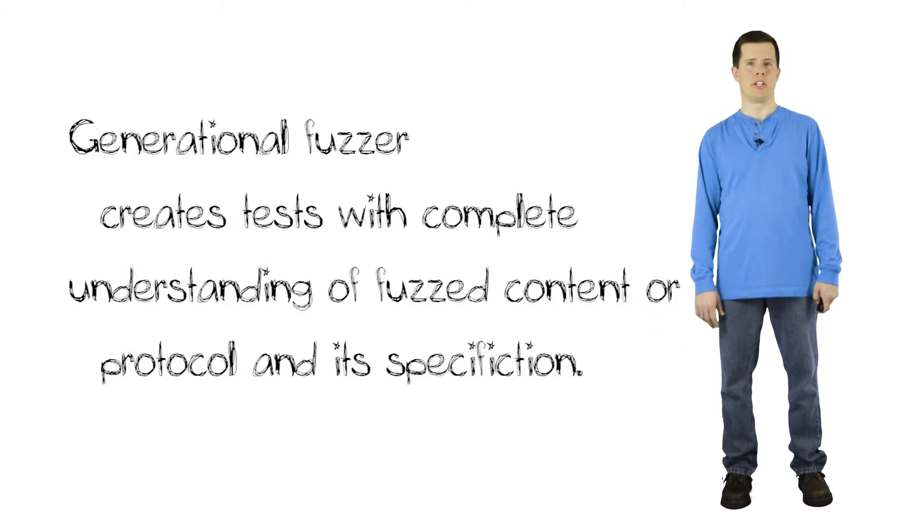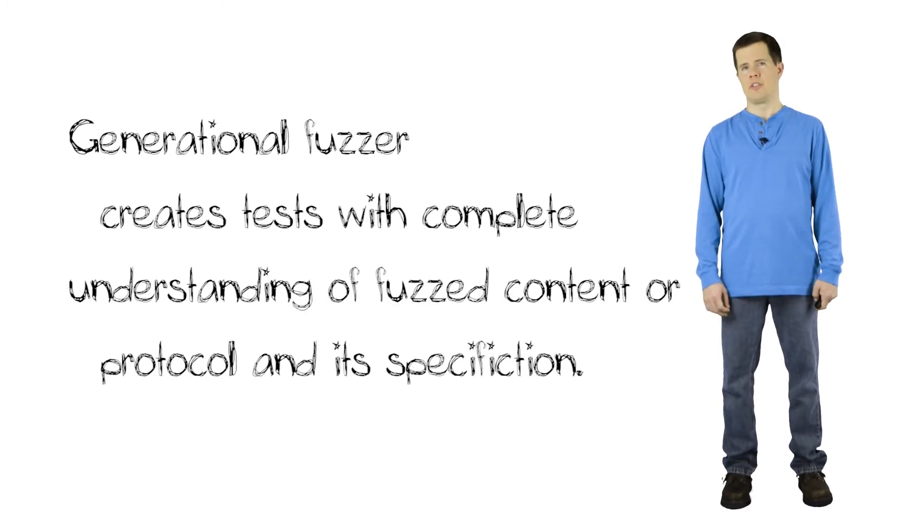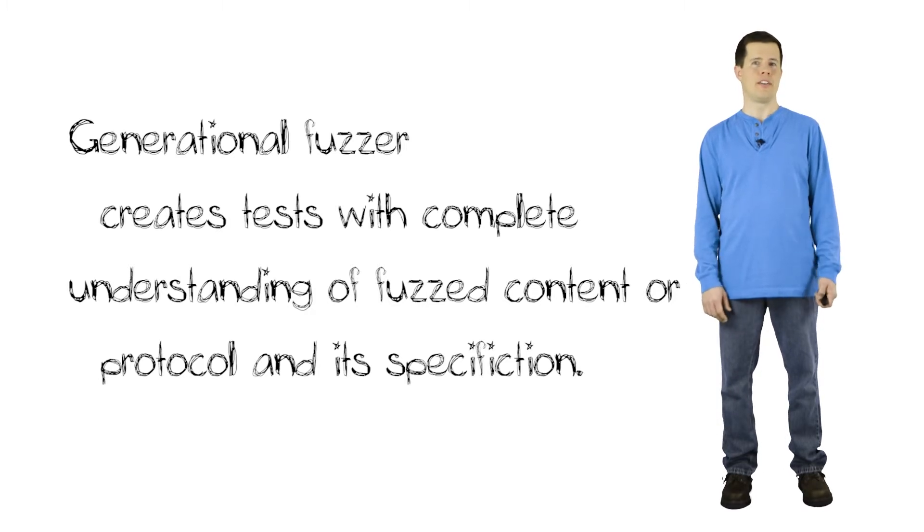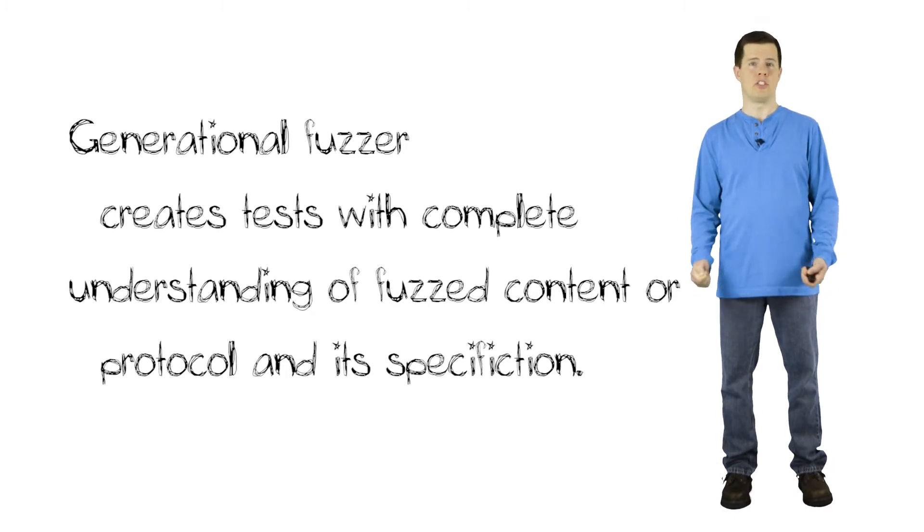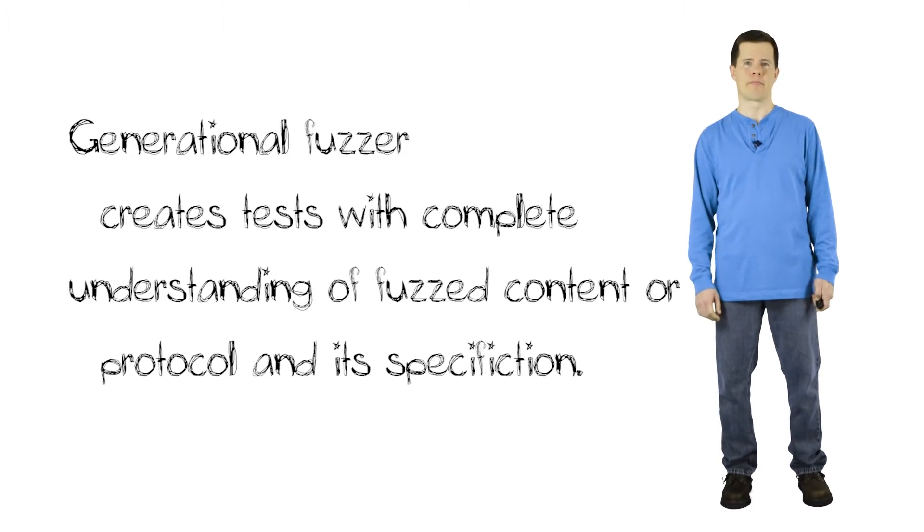The best kind of fuzzing is generational fuzzing, which is also called model-based fuzzing. And here, the fuzzer knows everything about the protocol or the file format that you're fuzzing. So if it's an HTTP fuzzer, it's been implemented from the HTTP specifications, and the fuzzer knows every possible message type. It knows every field of every message. It knows the rules about how messages are exchanged in this protocol.